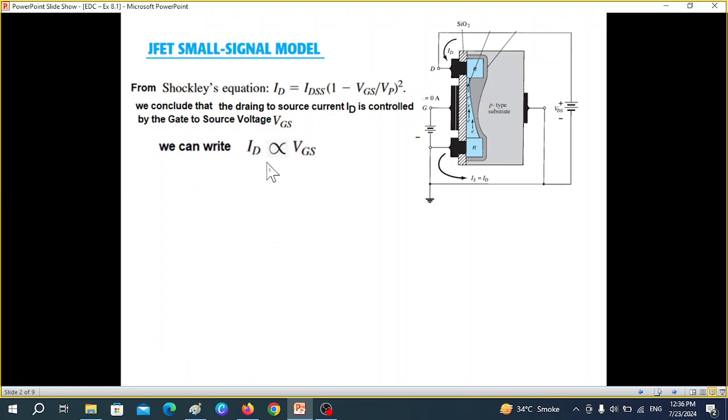So we can say that ID is proportional to VGS or delta ID is proportional to delta VGS or we can replace the constant of proportionality with some constant for delta ID is equal to GM delta VGS where GM is called the transconductance factor. And so from this equation we can write that GM is delta ID over delta VGS.